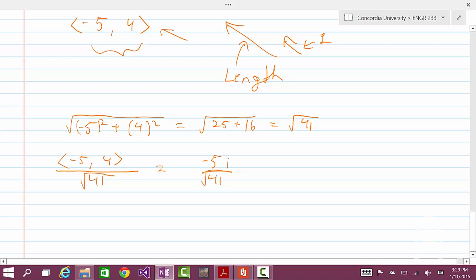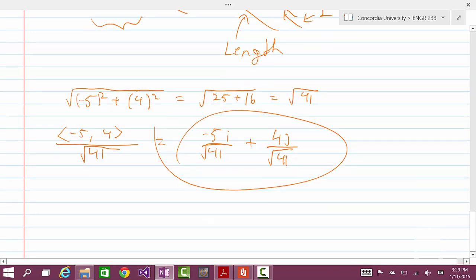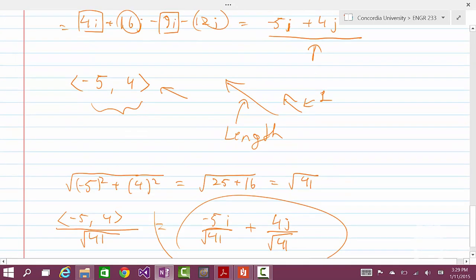Which means that it would be minus 5i divided by 41, actually square root of 41, can't forget that, plus 4j divided by square root of 41. And this would give us the unit vector for this vector.